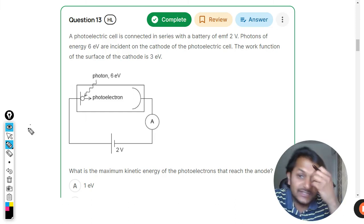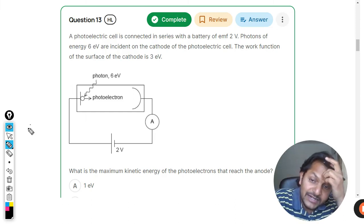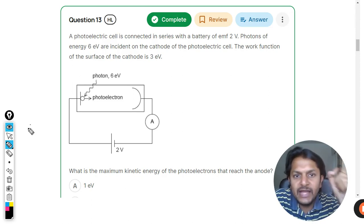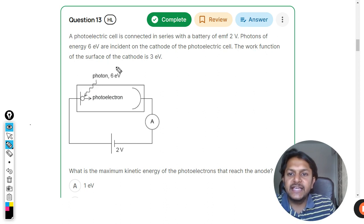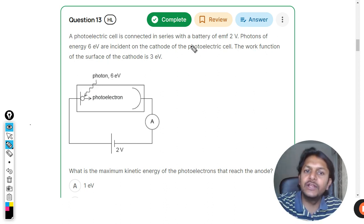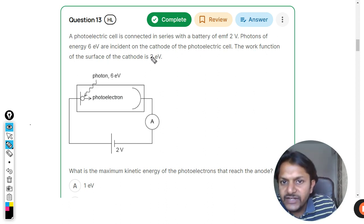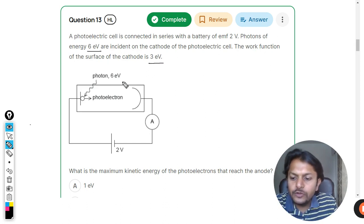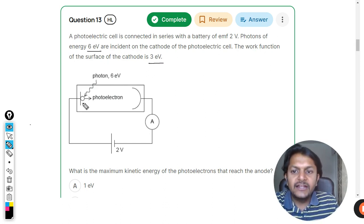Let's see what is in this question. A photoelectric cell is connected in series with a battery of 2 volts. Photons of 6 eV are incident on the cathode of the photoelectric cell. The work function is given as 3 eV, so the photon which is coming is 6 eV and the work function is 3 eV.